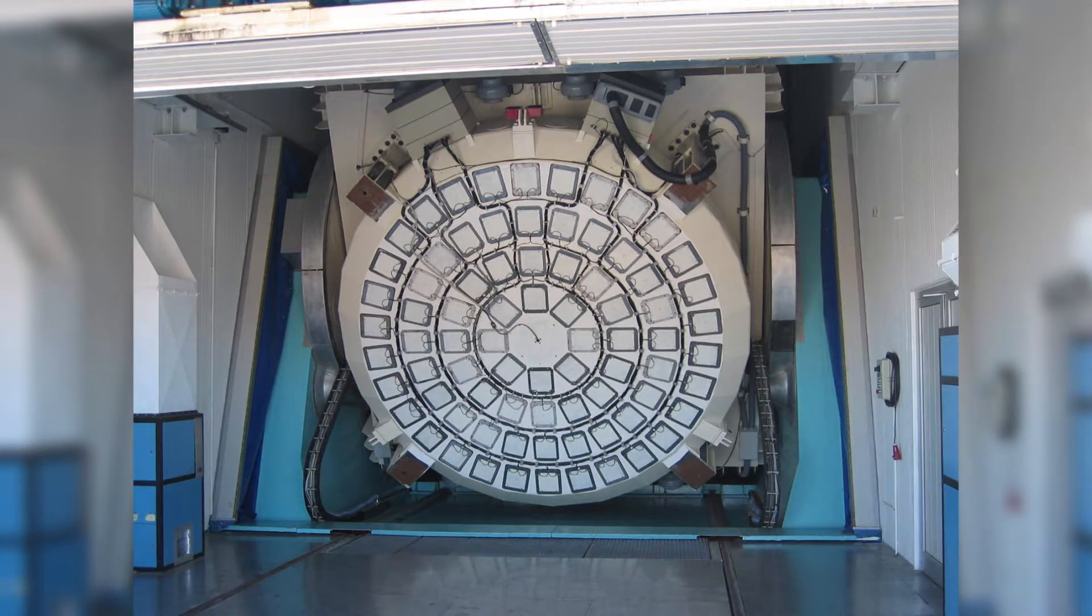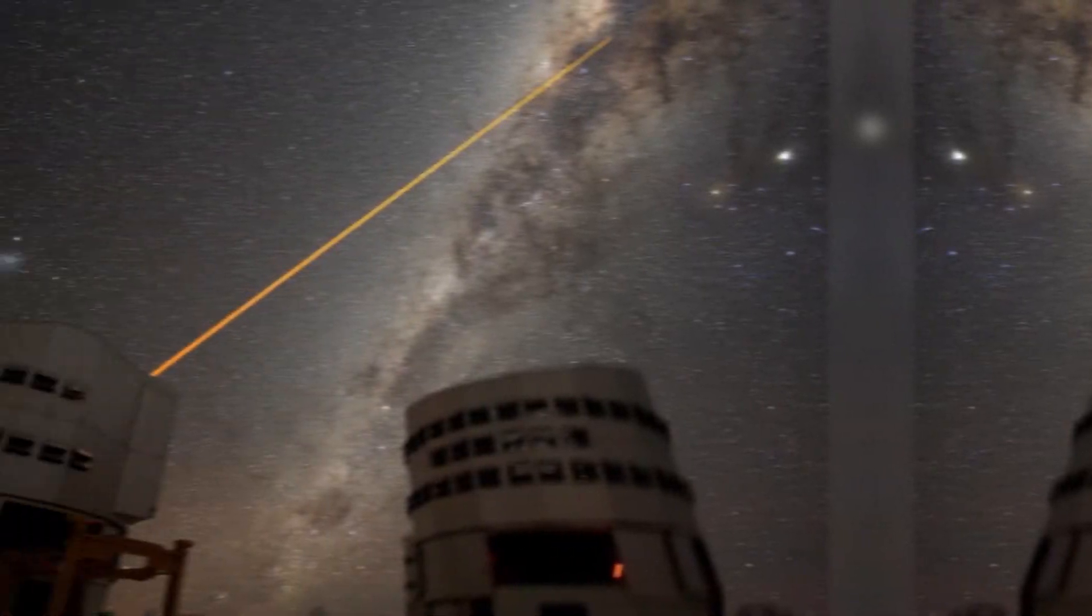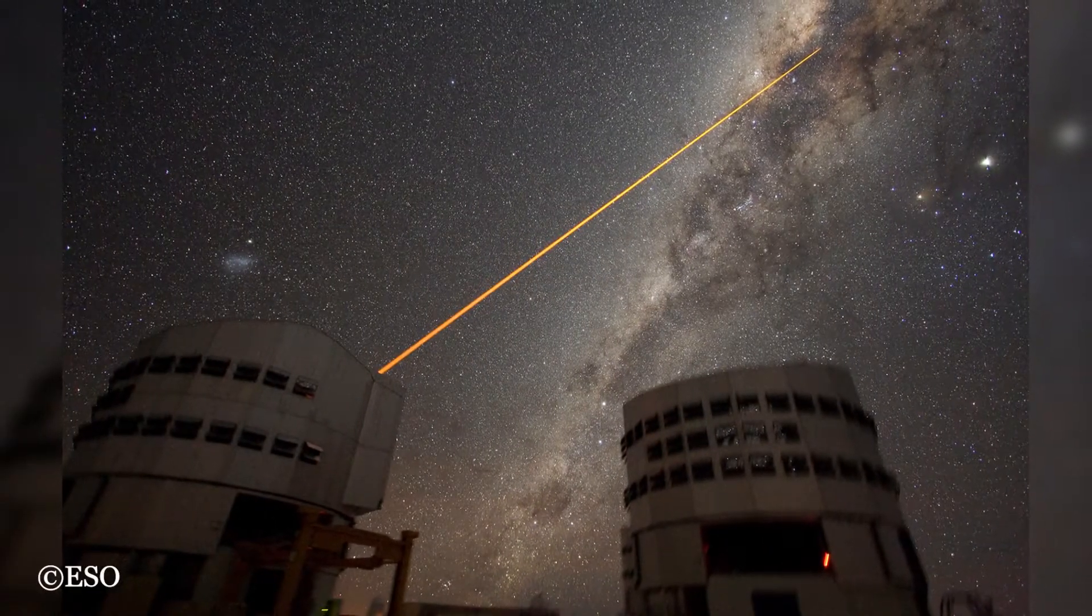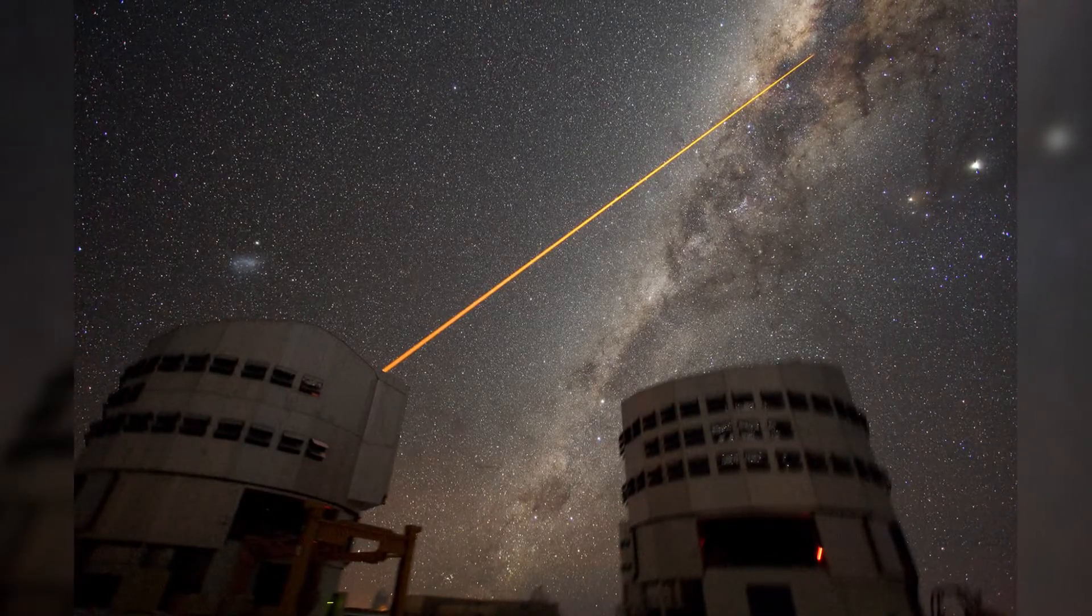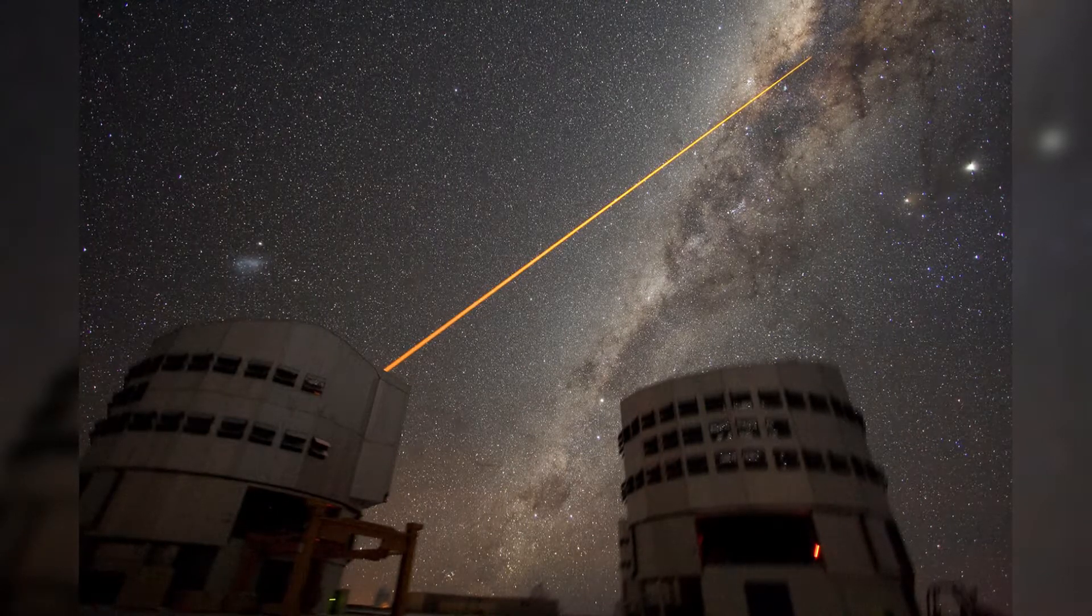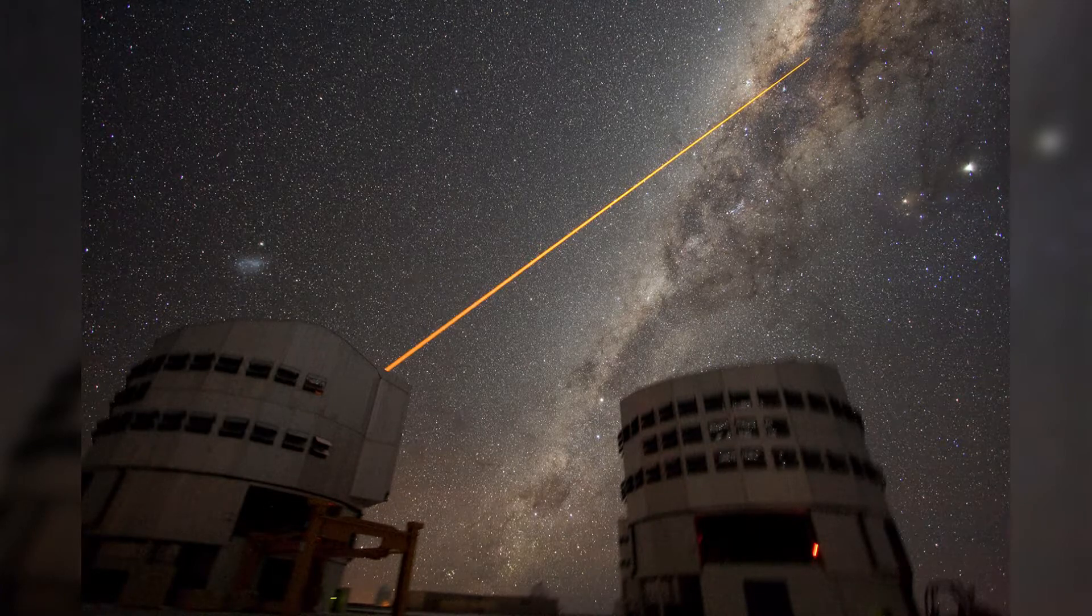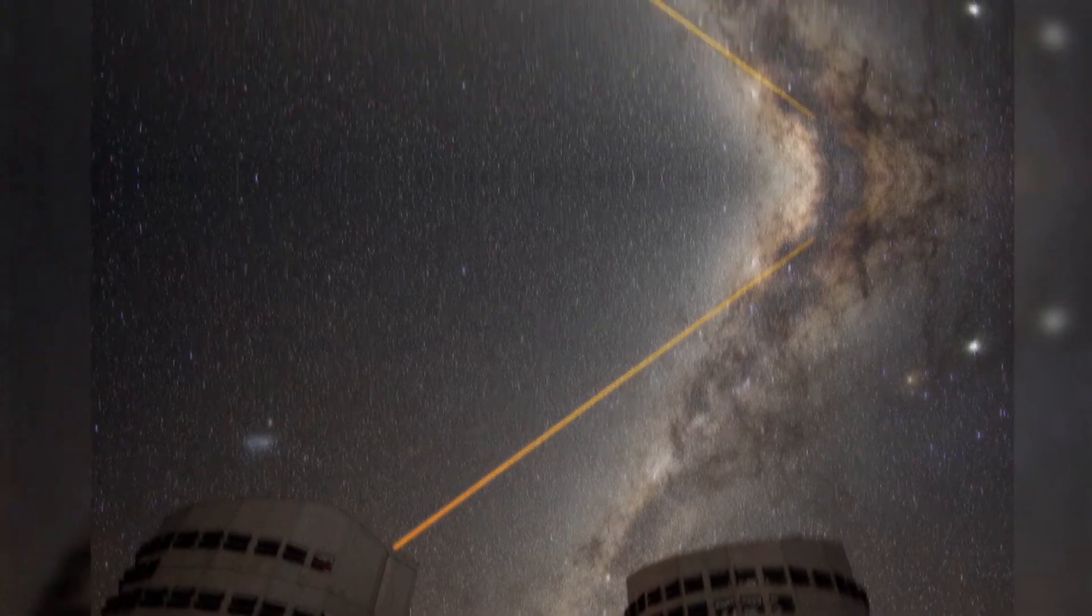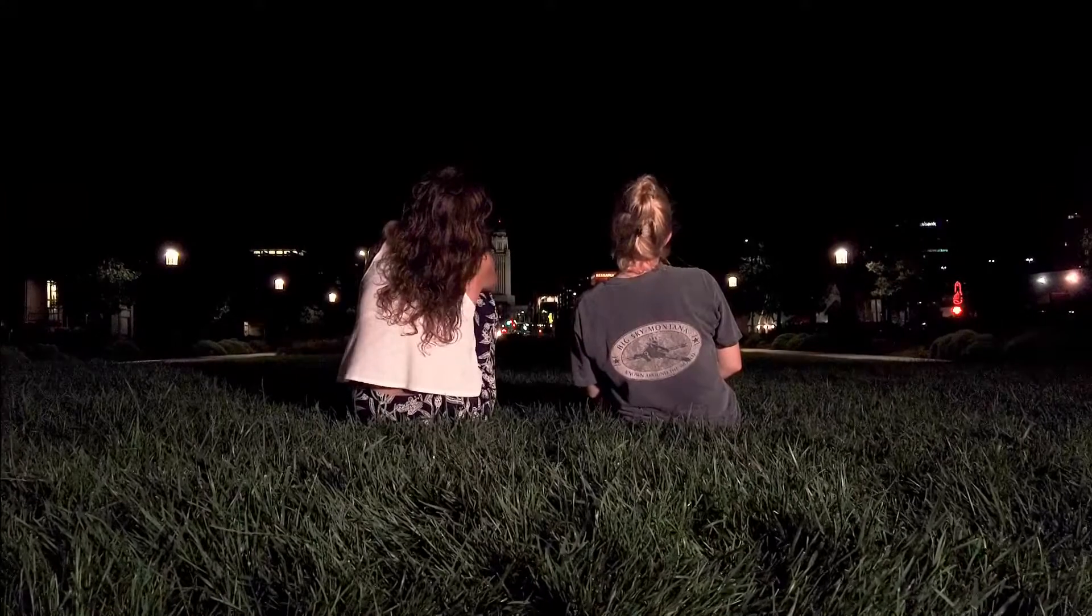All large telescopes make use of active optics today. A related technology is adaptive optics, deformations of the mirror over a much shorter timescale, which are used to minimize the effects of atmospheric turbulence. As you can see, a laser mounted on this telescope is exciting sodium atoms in the upper atmosphere, creating an artificial star. Adaptive optics then corrects for the effects of atmospheric turbulence on this artificial star and other objects in the field of view as well.